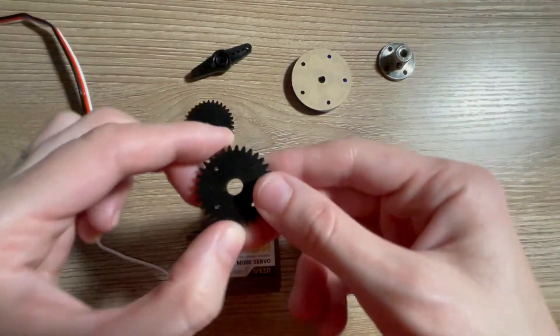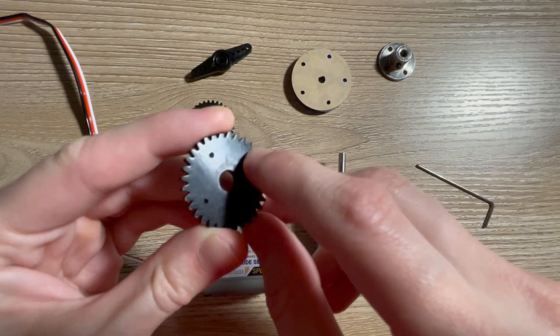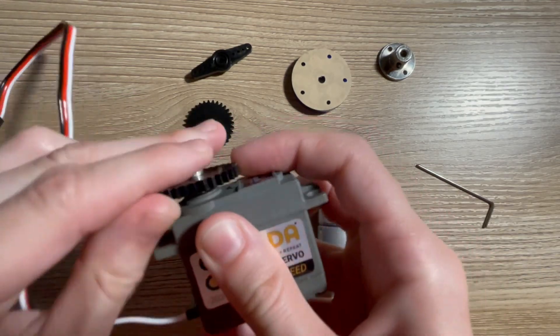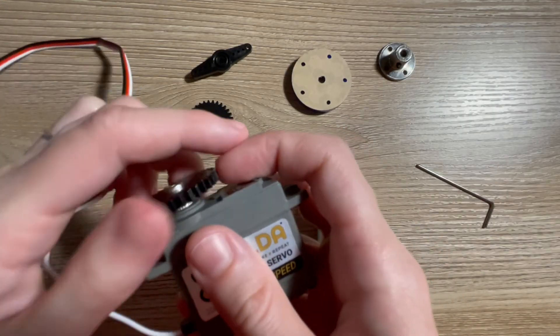For example, we have this one here, we have some holes drilled in, and you can use very small screws to screw through. This would then attach here, and you could then screw a hole through your part of your project as well.